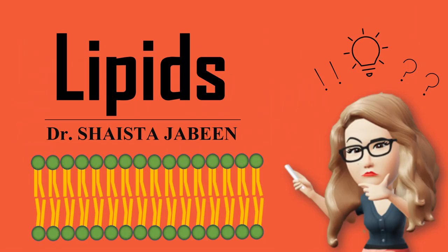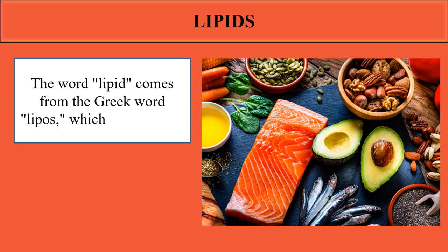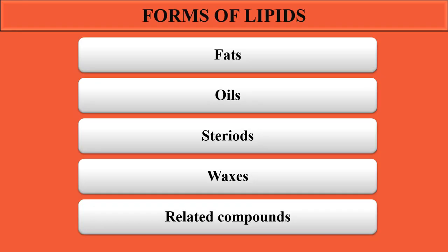This video is about what are lipids. The word lipid is derived from the Greek word 'lipos' which means fat. Lipids are also considered a major source of energy for the body. In nature, lipids are present in different forms — they are available as fats, oils, waxes, and some other related compounds.